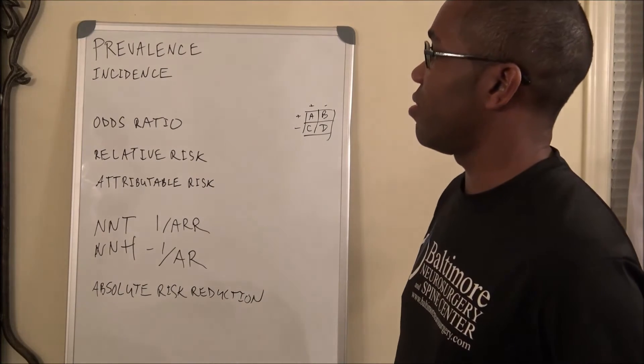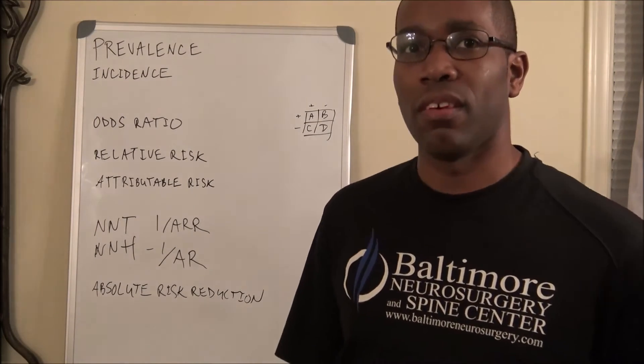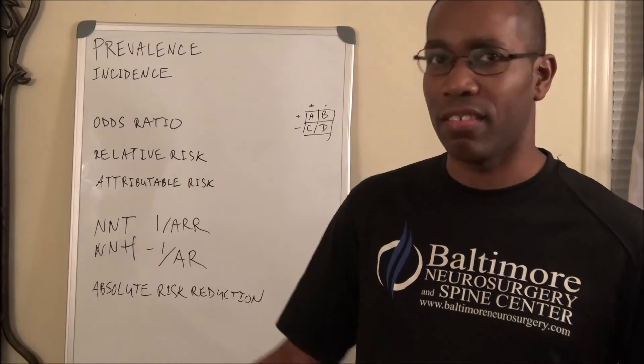Now, prevalence is essentially how many people have the disease. In a given population, how many people are going to have that disease.